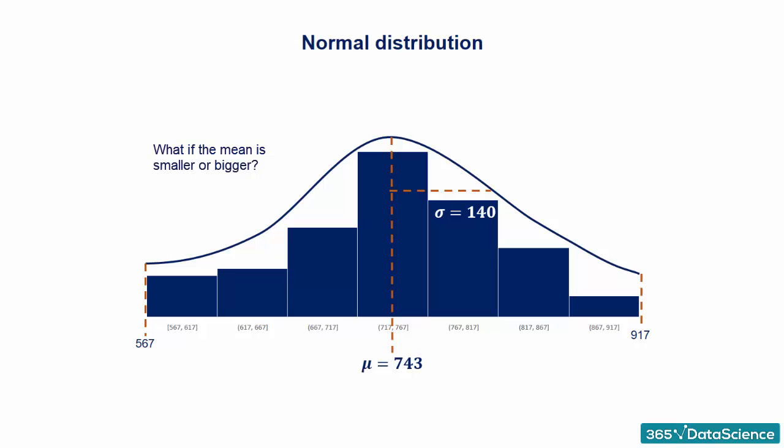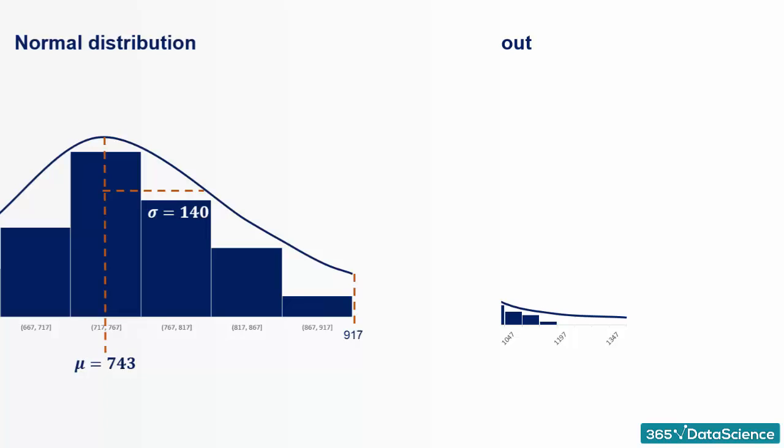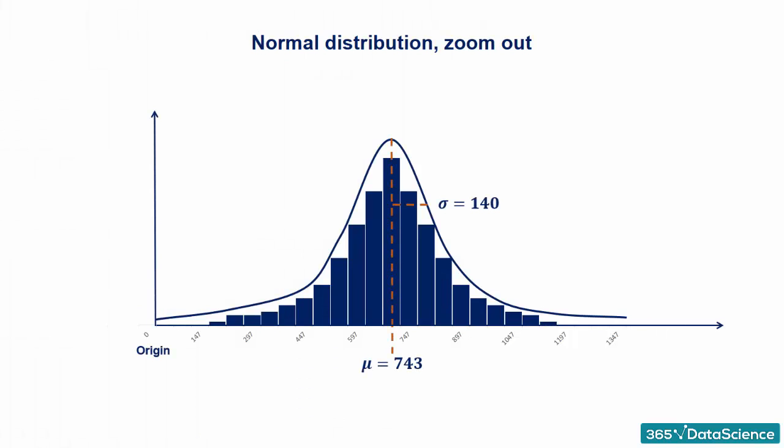Ok, great! But what if the mean is smaller or bigger? Let's first zoom out a bit by adding the origin of the graph. The origin is the zero point. Adding it to any graph gives perspective.